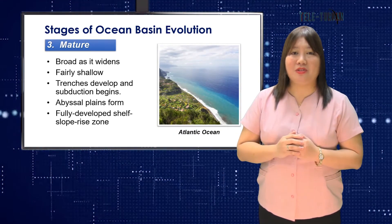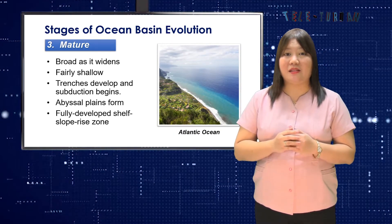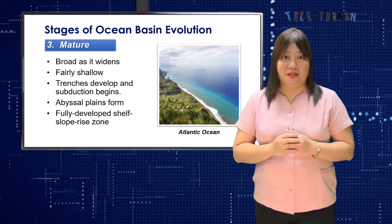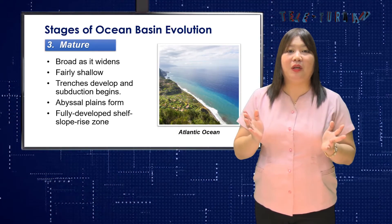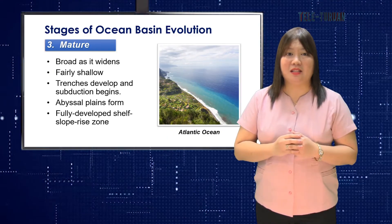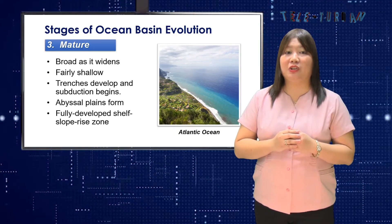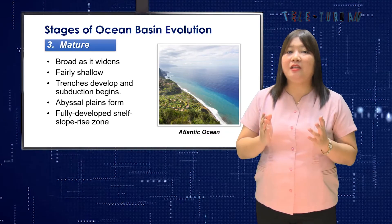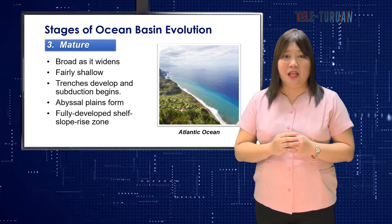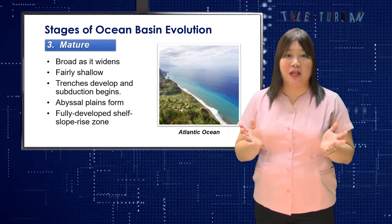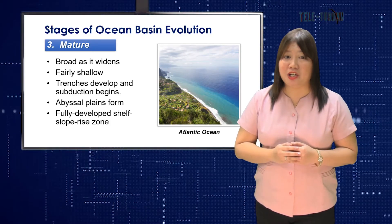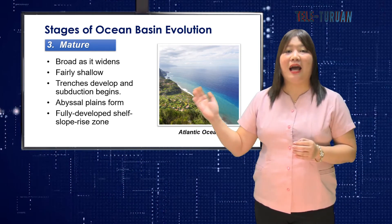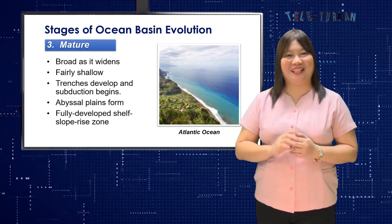In Stage 3, a mature ocean basin becomes broad as it widens. Trenches develop and subduction begins. The ocean floor between the spreading axis and the continent subsides by thermal contraction of the underlying lithosphere. Abyssal plains form and the continental shelf-slope-rise zone becomes fully developed. The continental margins are more or less parallel to the central spreading ridge, as in the Atlantic Ocean.